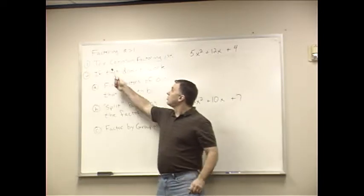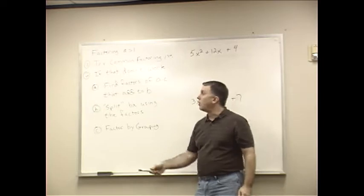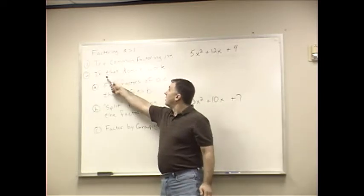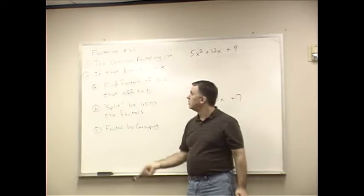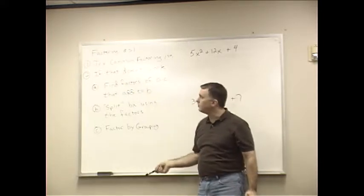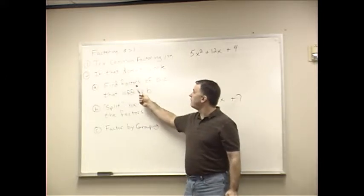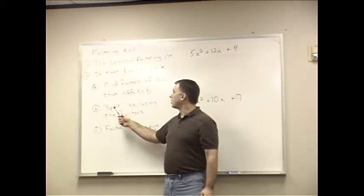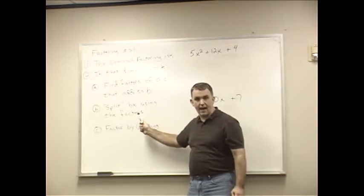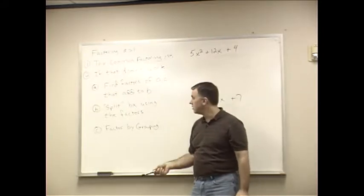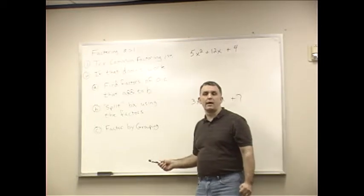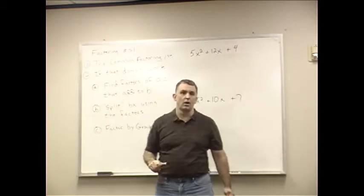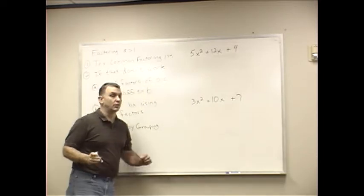So you're trying to factor something where A is greater than 1. Try the common factoring first. If that doesn't work, we're going to do these steps here. We're going to find factors of AC that add to B. We're going to split BX using the factors that we find right here. And then we're going to factor by grouping. Now, what does this mean right here? Let's go ahead and let's just do it so that you can see.